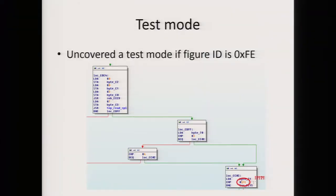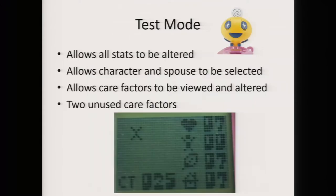Another fun thing I discovered is that the Tamagotchi has a test mode in it. I was looking at the figure processing and found there are really two types of figures — ones with restaurants and ones with shops — but I found there was a third type. I made a figure of this type, put it on my Tamagotchi, and found it has a debug mode. It's pretty cool: it allows every stat to be altered, you can make every single character, change what its spouse looks like, see the care factors, and I also found a bunch of unused functionality.